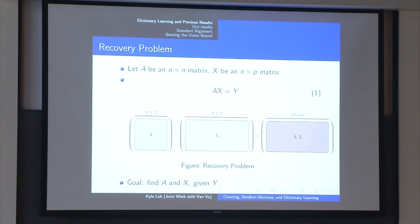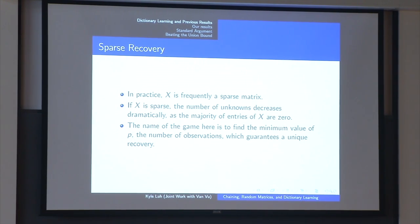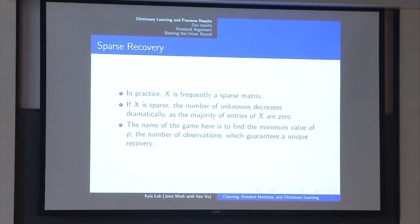But in applications generally you can make some assumptions on X. The most common one is that X is in fact a sparse matrix — there are very few non-zero entries. So the number of unknowns decreases dramatically and the problem is a little more tractable.